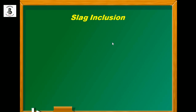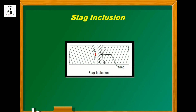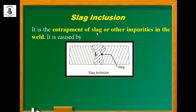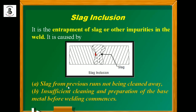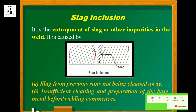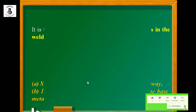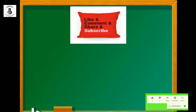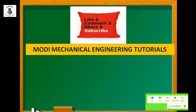Finally, slag inclusions. When flux is part of the welding process, slag is generated. If this slag in molten form is found in the weld zone, it is known as slag inclusion — the entrapment of slag or other impurities into the weld. It is caused by slag from previous runs not being cleaned away, and insufficient cleaning and preparation of the base metal before welding commences. I hope you understand this. If you like this, please subscribe and share more mechanical engineering tutorials. Thank you so much, and keep watching.